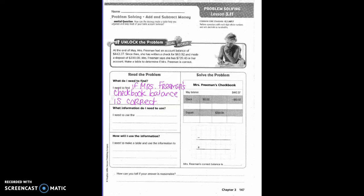What information do I need to use? I need to use the starting balance. What else? So the starting balance, what she made the check out for, and how much she deposited.